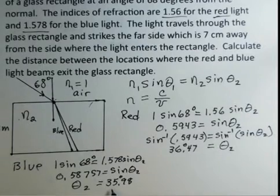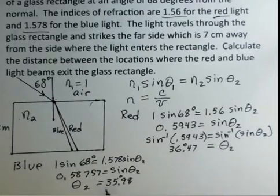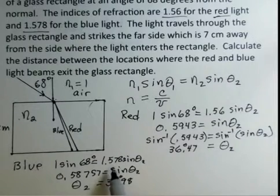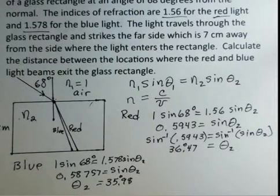Blue light is bent more than red light. The index of refraction for blue light is higher. There's more interaction between the blue light and the glass molecules than there is between red light and the glass molecules. So there's our relationship for those.